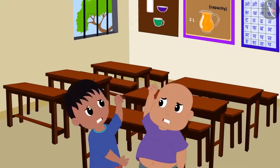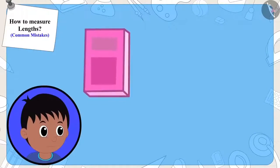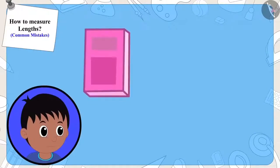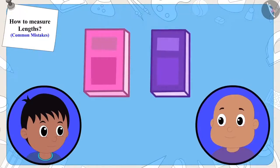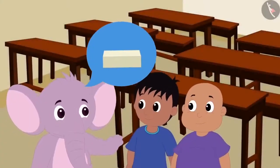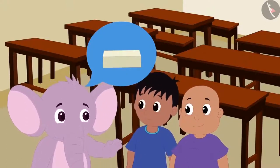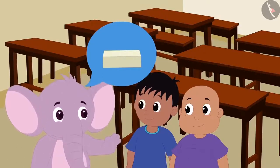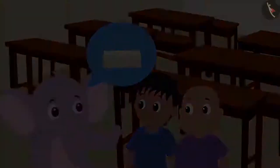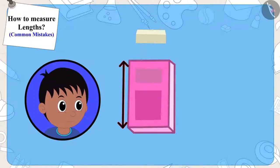Raju and Bablu are fighting in class. Raju is saying that his notebook is longer, and Bablu is saying that his notebook is longer than Raju's. Appu saw them fighting and told them that they can use an eraser to measure the length of the notebook. This way, they will know which of the two notebooks is longer. First, Raju measured the notebook with an eraser — the length was five erasers long.